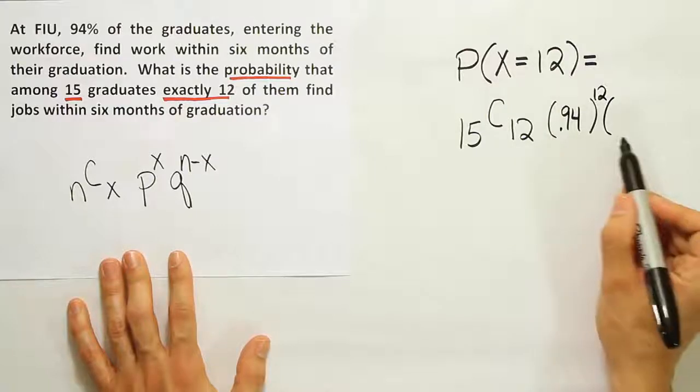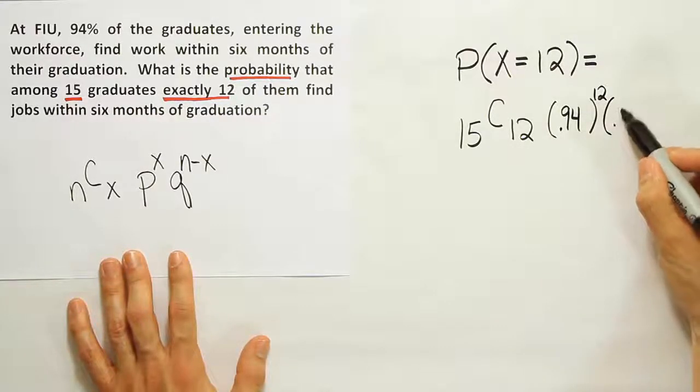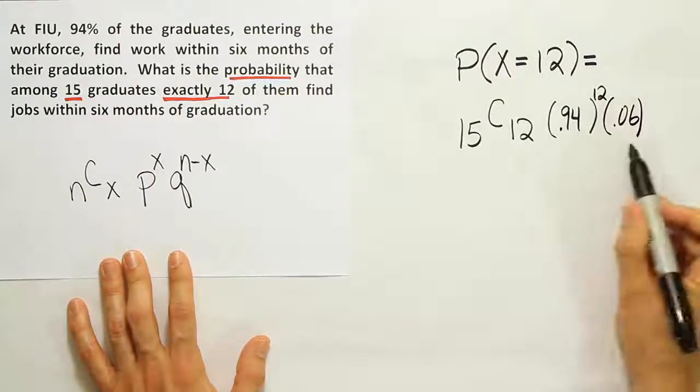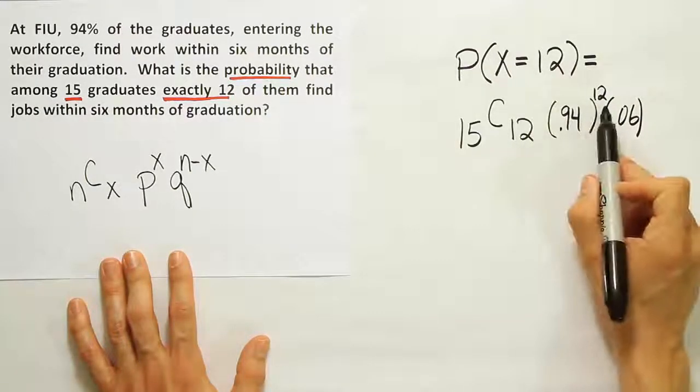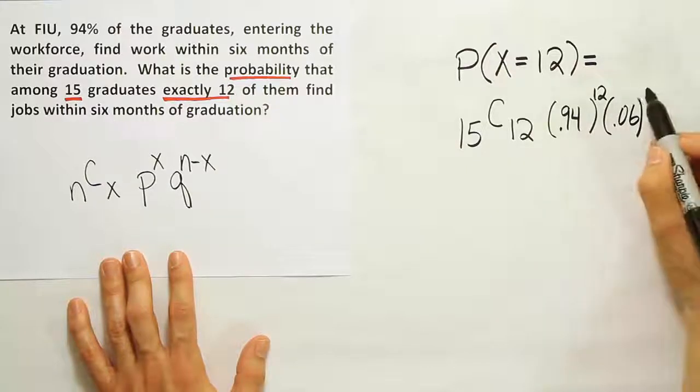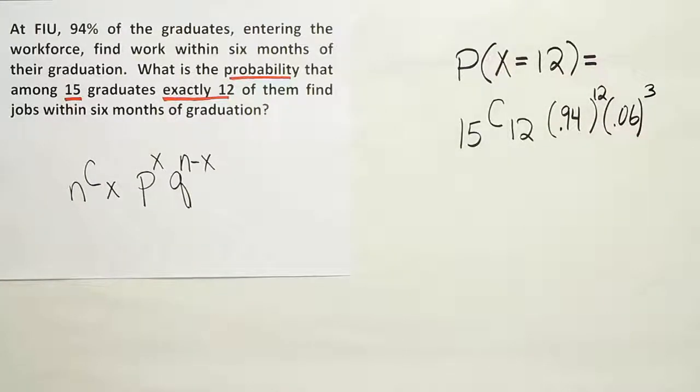If 94% find jobs, we need the complement of that, or in other words, 0.06—in other words, 6% that do not find jobs. Then we need the complement or the leftover amount from 15 that won't find jobs. If 12 get jobs, the remaining 3 do not. And that should be our solution for the problem.